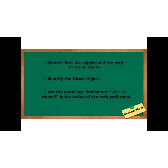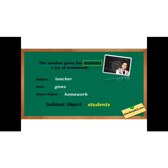Identify first the subject and the verb in the sentence. Then identify the direct object. Ask the question 'for whom' or 'to whom' — is the action of the verb performed? सबसे पहले हम जुम्ले को देखते हैं, verb को ढूंढते हैं, subject को ढूंढते हैं, फिर direct object को identify करते हैं, उसके बाद हम questions बनाते हैं।